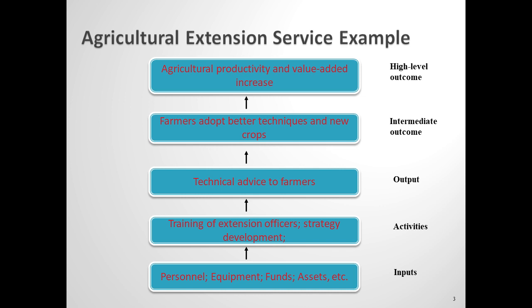The inputs that are used in this process are the personnel, the equipment including the cars that they use, the funds, the assets, and so on and so forth. The activities refer to the work processes which are part of or which support the provision of this advice. They include things such as the organising of the logistics of the visits and meetings, the ongoing professional training of officers, the strategy planning behind the delivery of this advice, including decisions about what types of farmers to target and what forms of technical advice to focus on.